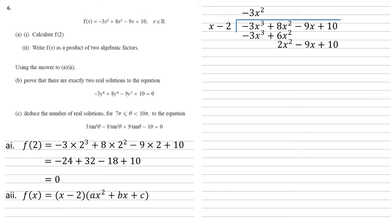Now we repeat the process. How many x's go into 2x squared? That's 2x. Multiplying (x minus 2) by 2x gives us 2x squared minus 4x. Taking that away leaves us with minus 5x plus 10.